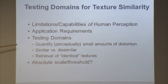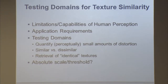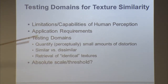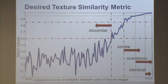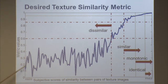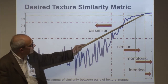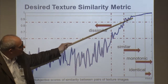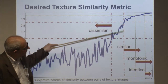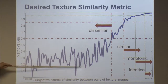We found three domains: one is quantifying small amounts of distortion, the second is distinguishing similar from dissimilar textures, and the third is retrieving identical textures. There is also the question of picking a threshold for the metric above which things are considered similar or identical. Conceptually, we want a monotonic relationship between subjective and objective similarity at the top of the scale for small distortions, high values for similar textures, and low values for dissimilar ones.